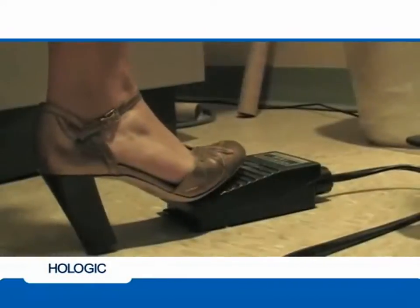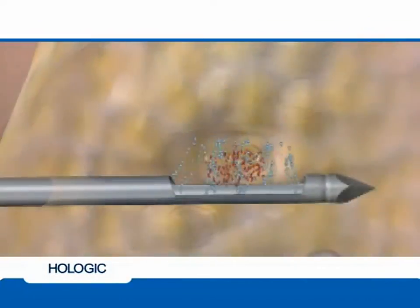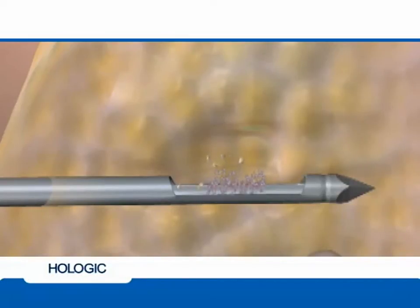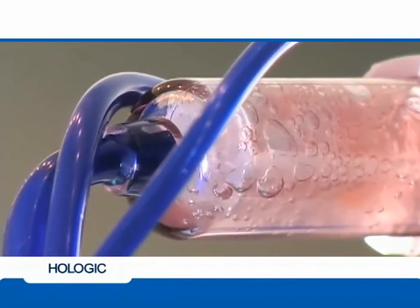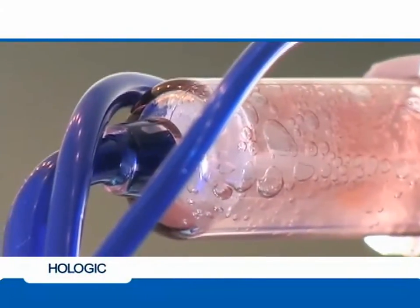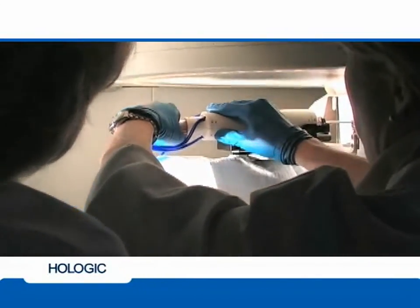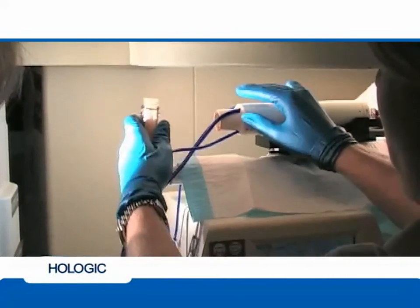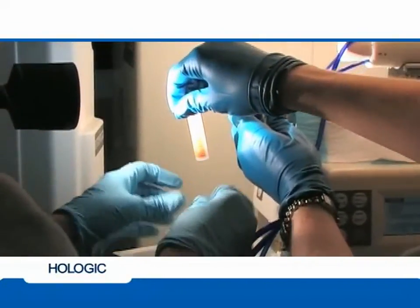When the necessary core samples have been retrieved, release the foot pedal and switch the console to lavage mode by pushing the button marked lavage. Lavage mode continuously delivers saline to the biopsy site and aspirates the biopsy cavity, allowing loose tissue and other fluids to be cleansed from the site. Lavage the cavity until the fluid in the collection chamber indicates the cavity is clear. To retrieve the sample cores, leave the console in lavage mode and disconnect the saline line at the proximal end of the Y-valve. The cores are now ready to be retrieved from the tissue collection chamber at the back of the handpiece. Place one hand on the handpiece and the other on the collection chamber, then rotate the collection chamber counter-clockwise to disengage the container from the handpiece.